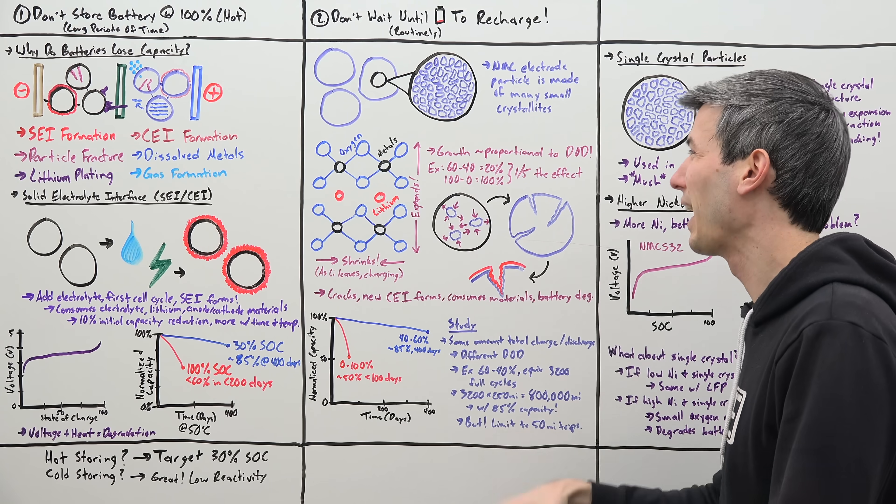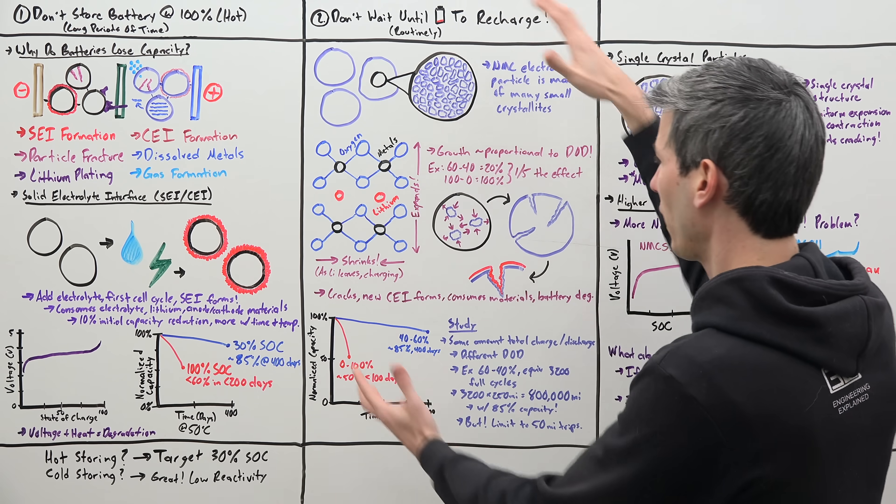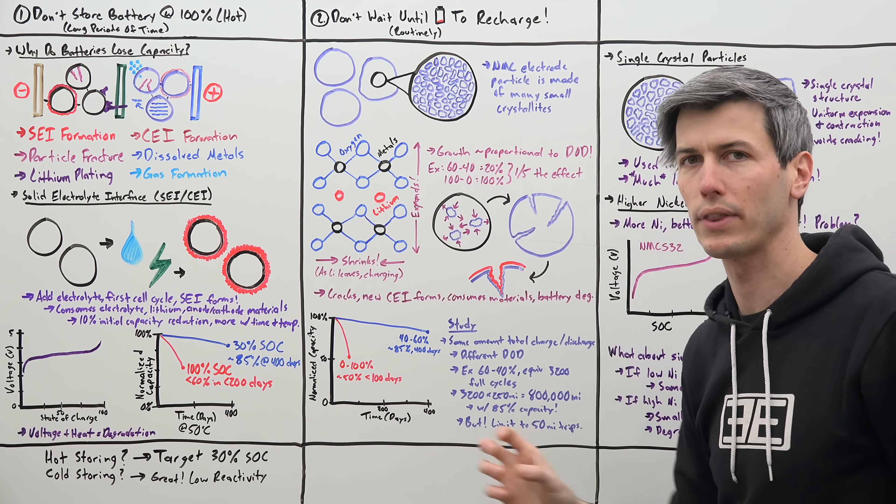So that 60 to 40 has about a fifth of the effect of this growth and contraction that you have within these crystals.